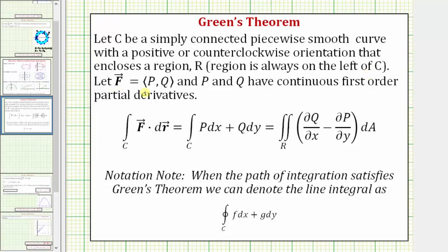then if the vector field F has components P and Q where both have continuous first order partial derivatives, then the line integral along the curve C of F dot differential R, or the line integral in differential form, is equal to the double integral over the region R of the partial of Q with respect to x minus the partial of P with respect to y, differential A.